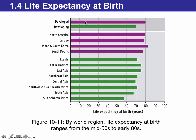For developed nations, life expectancy at birth is expected to be high — around 80 years. For developing nations, it's about 70 years. On average, life expectancy ranges from the mid-50s to the early 80s depending on the region. In North America, Europe, and parts of South Asia, people are expected to live close to 80 years, while in Sub-Saharan Africa the average life expectancy is about 55 to 56 years.